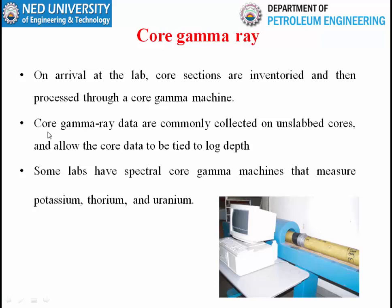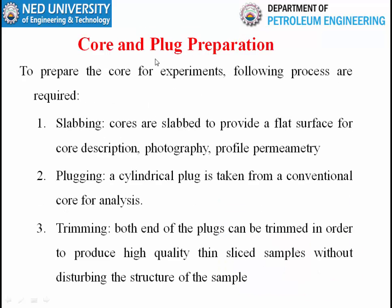The zones where core has been collected become known zones because properties are known from lab analysis. We first link these known zones with the logs. If information from both evaluation techniques matches, then we can rely on well logs to get information for unknown zones. By measuring core gamma ray, we link core depth to well log depth — this is very important.